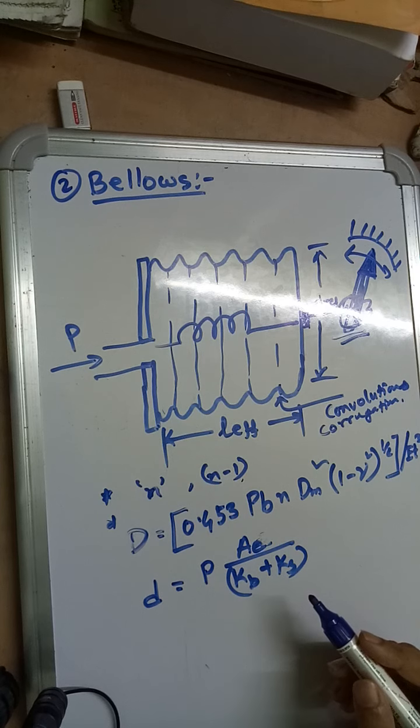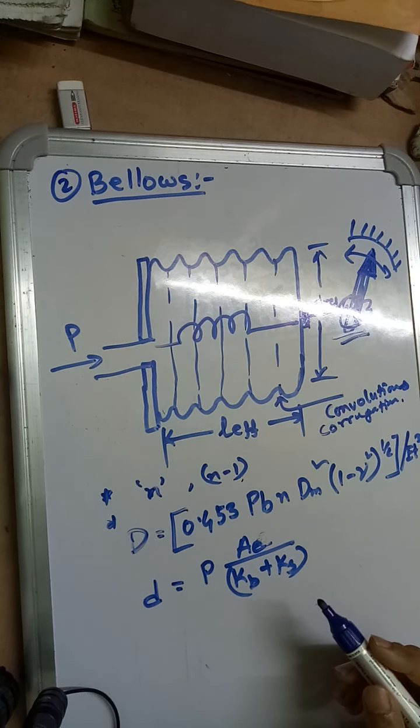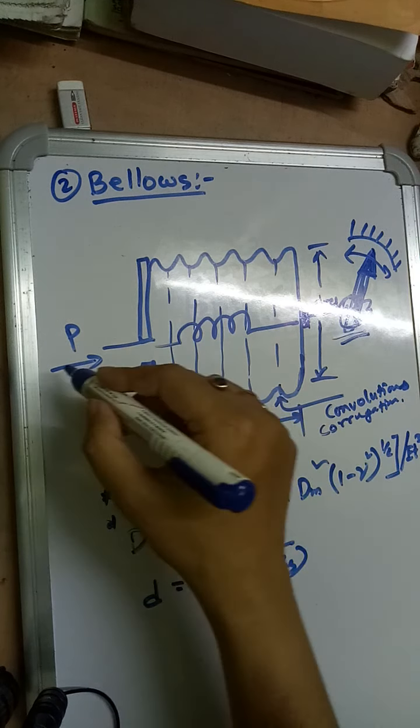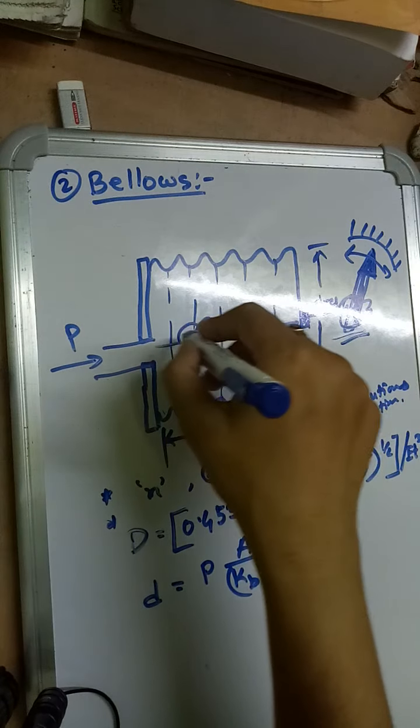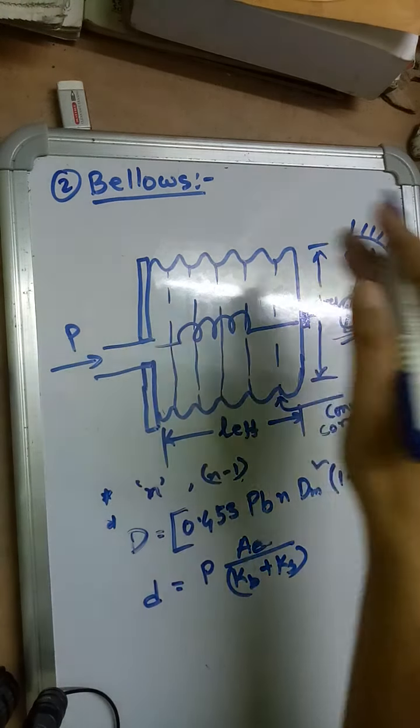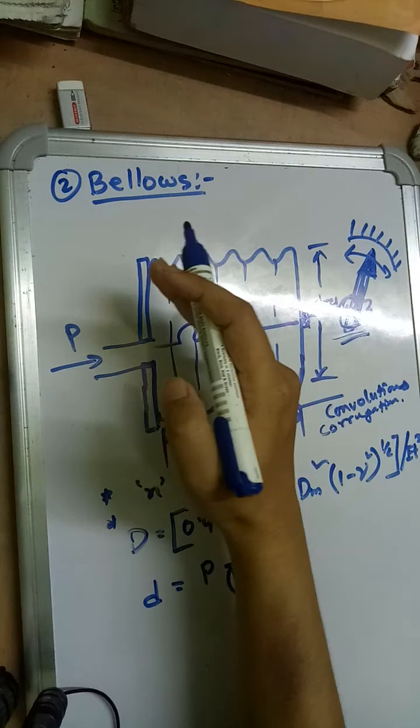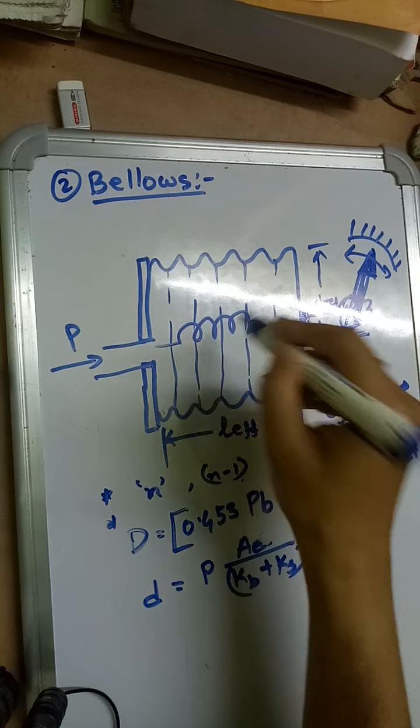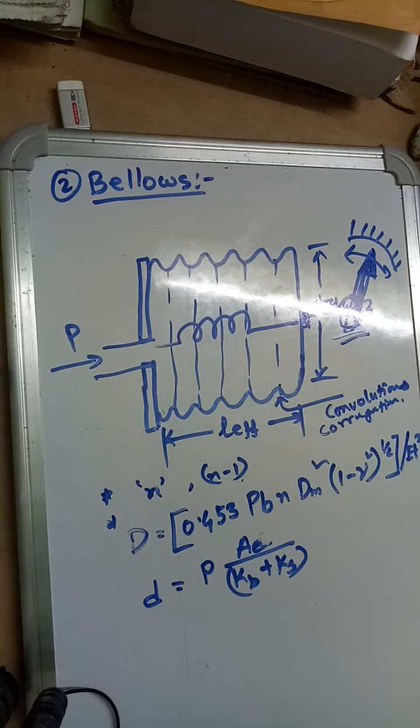Why is it called a retaining spring? Because when the pressure is applied it will be pressurized, then when the pressure is released it must come to its original position. So this spring, k_s, comes into the picture.